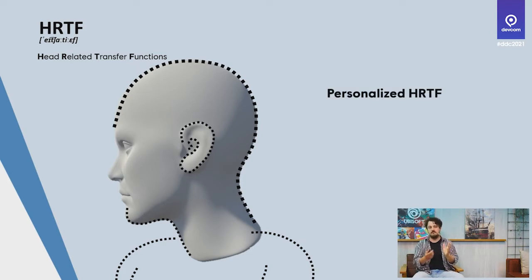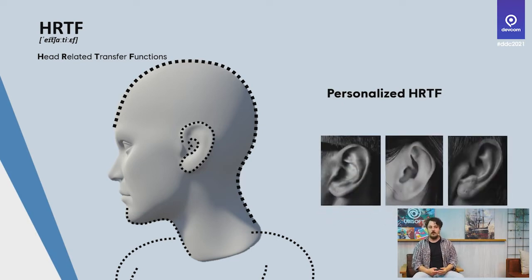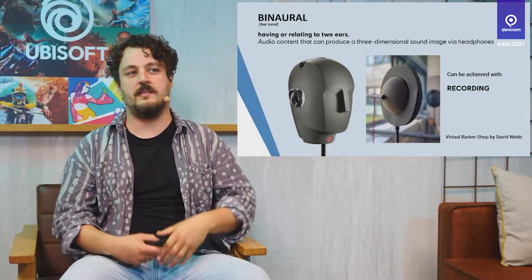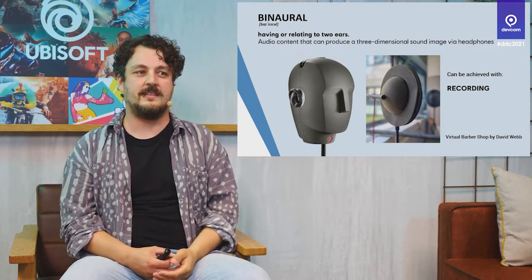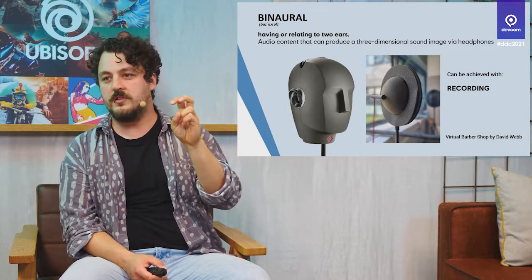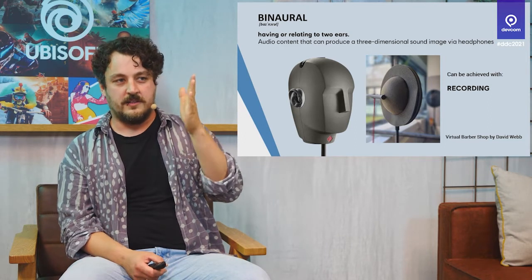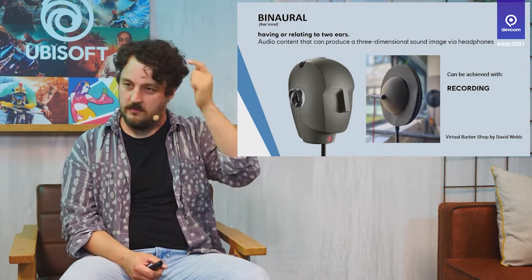There's also the concept of personalized HRTF. Since every ear is very different — we all have different ear shapes — we can agree on a common ground shape. But there are ideas where you photograph your ear and adapt accordingly. How you reproduce this in-game is the big question. One common approach from history is an artificial head — a recreation of your head including all the shapes of your ears. There's also the Jacqueline disc, which is a more simplified version of the artificial head.